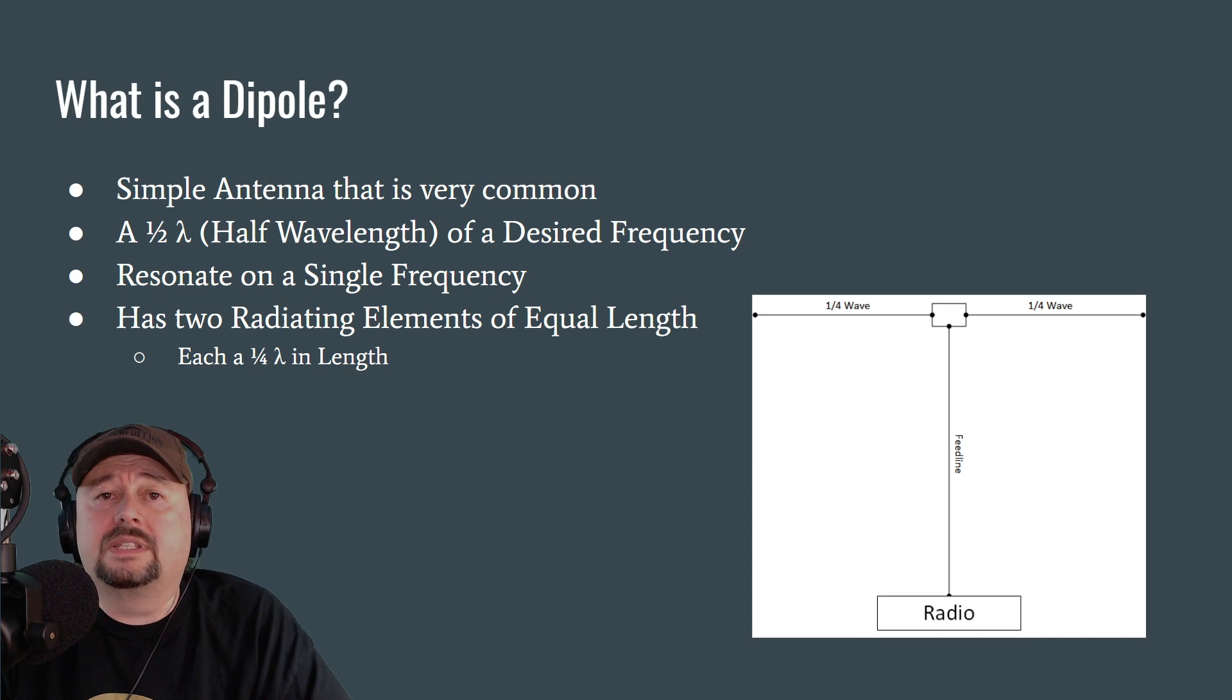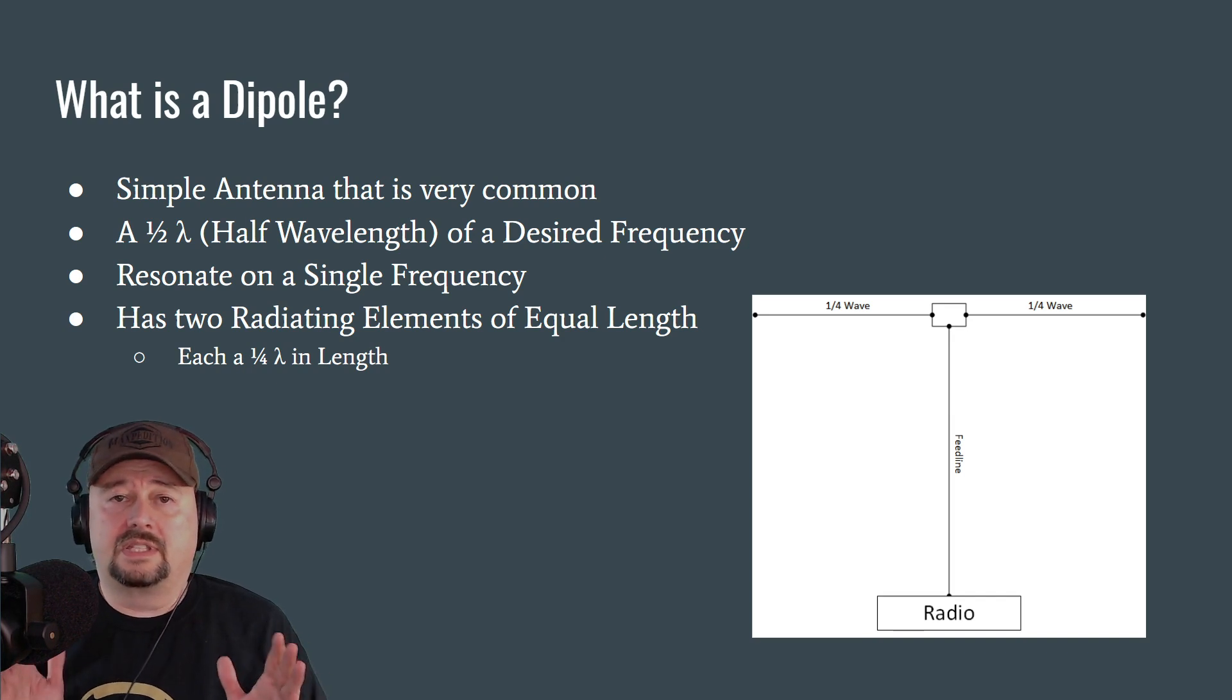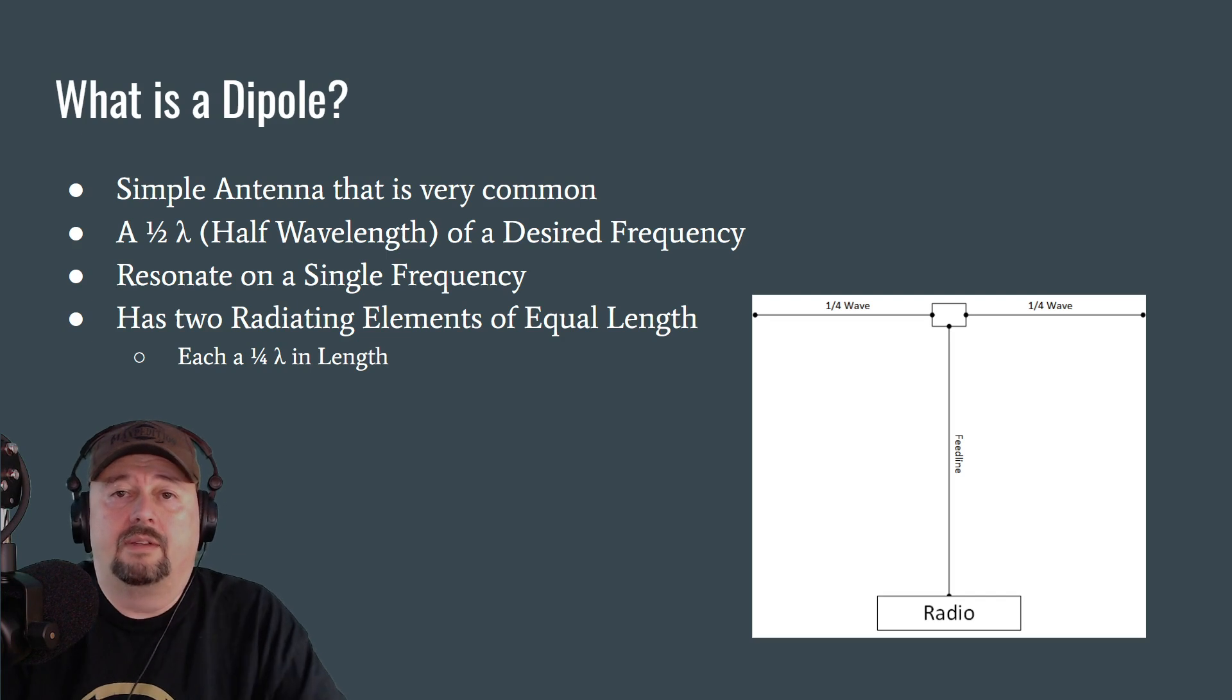So the first question is, what is a dipole? It's a simple antenna that's very common. They are a half wave of a desired frequency. So for example, if you were going to operate on, let's say, 14325, which is in the 20 meter band, that frequency has a certain size of wavelength and half wavelength would be one half of that. We'll talk more about that as we progress through the slides.